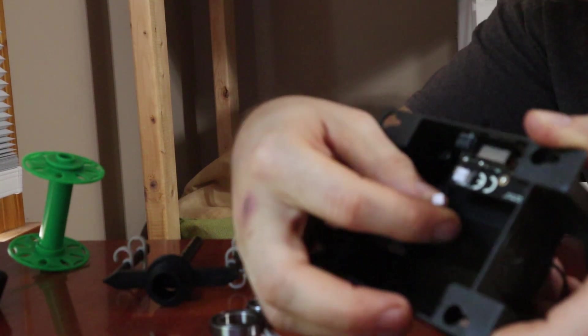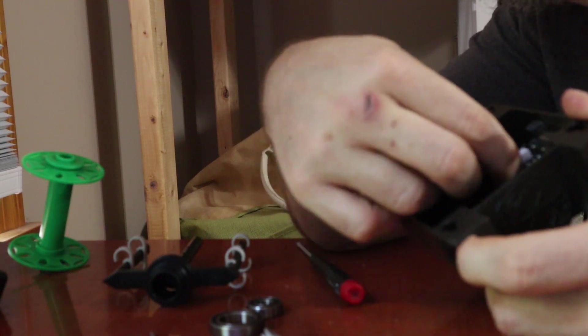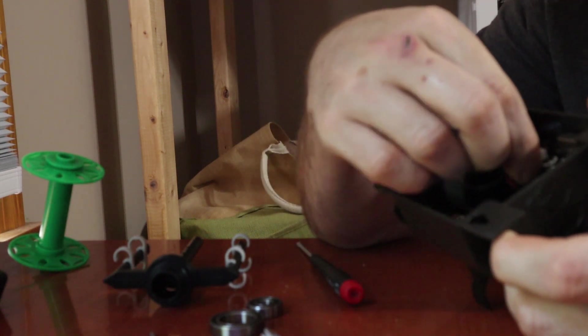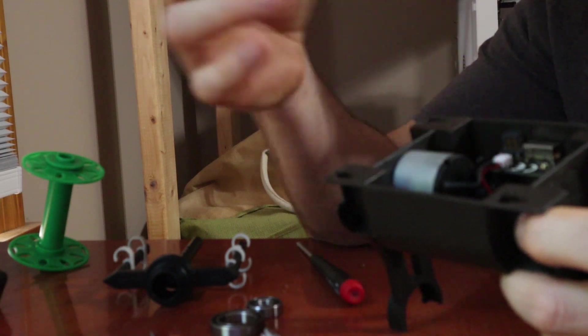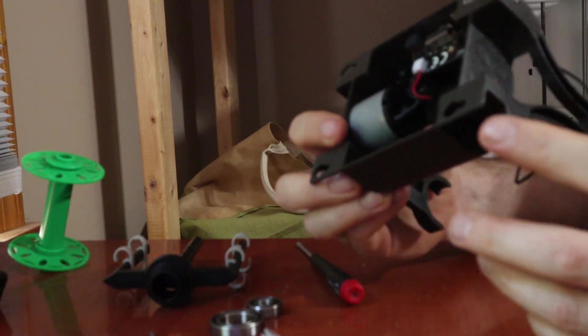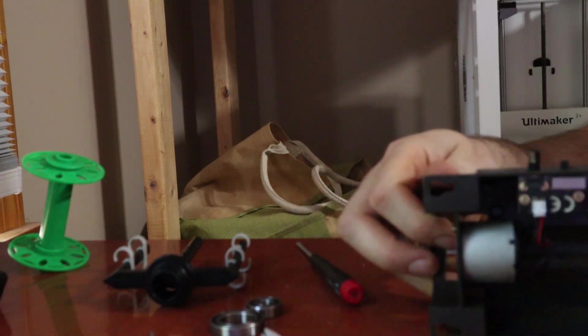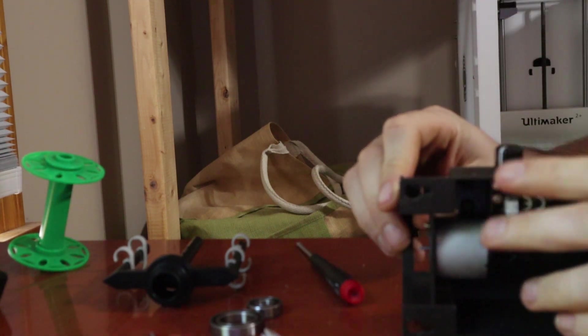So the next step is just to plug the motor into the circuit board and this one doesn't require a screwdriver like the previous one. You just plug it in like that. And there's only one way you can plug it in so you can't get the wires reversed. I'll put the dial back on like that.